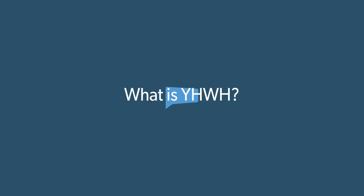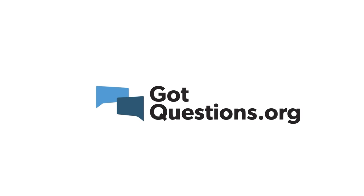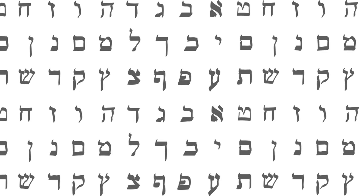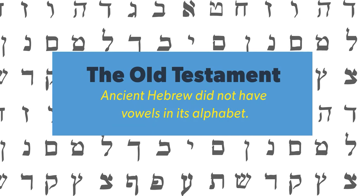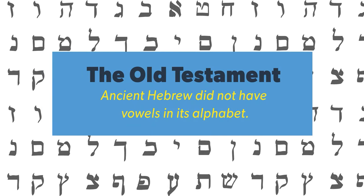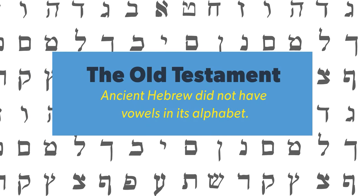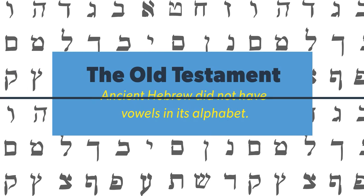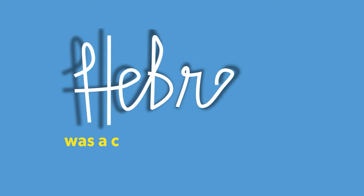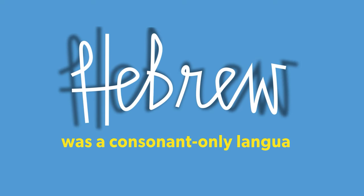What is YHWH? The ancient Hebrew language that the Old Testament was written in did not have vowels in its alphabet. In written form, ancient Hebrew was a consonant-only language.